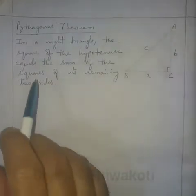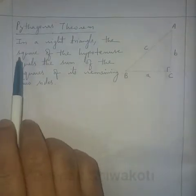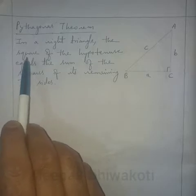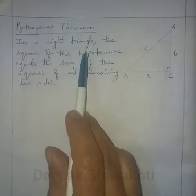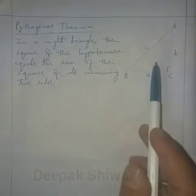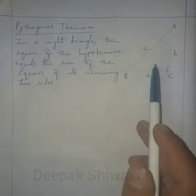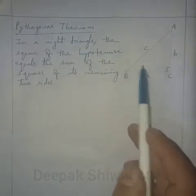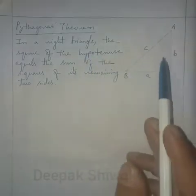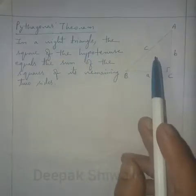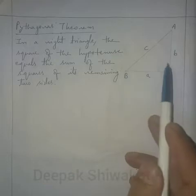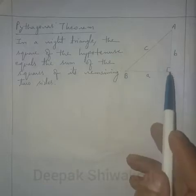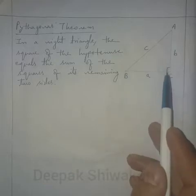Here is the Pythagoras Theorem statement. In a right triangle — right triangle means right angle triangle — this theorem is applied to every right angle triangle. A right angle triangle is a triangle where one of the angles is 90 degrees.